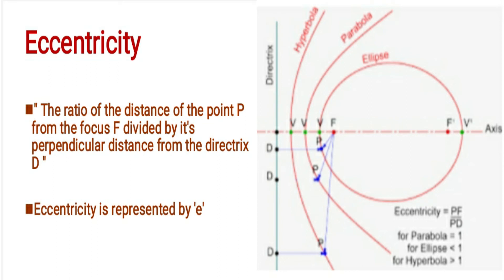In the hyperbola case, PF by PD. In the parabola case, PF by PD—the eccentricity value in this case is one.